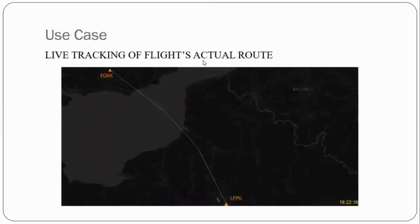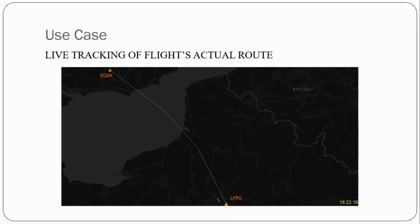Let's understand this with a use case. Suppose we want live tracking of a flight's actual route. The flight's actual location keeps changing at every interval of time. If we want to get the current location of our flight, we never request the server every time to get updated data. Instead, we use Streaming API — once the server has available updated data, it will send it to the client automatically. We don't need to request every time to get updated data in real time.